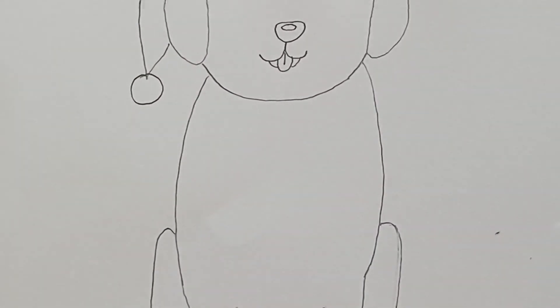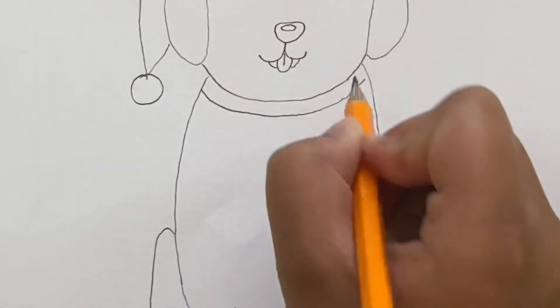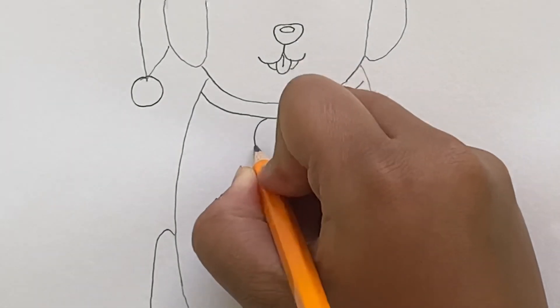Now we're going to move on to the body. And we're going to draw something else. We're going to draw a collar here. So just make a line. And now make a circle.